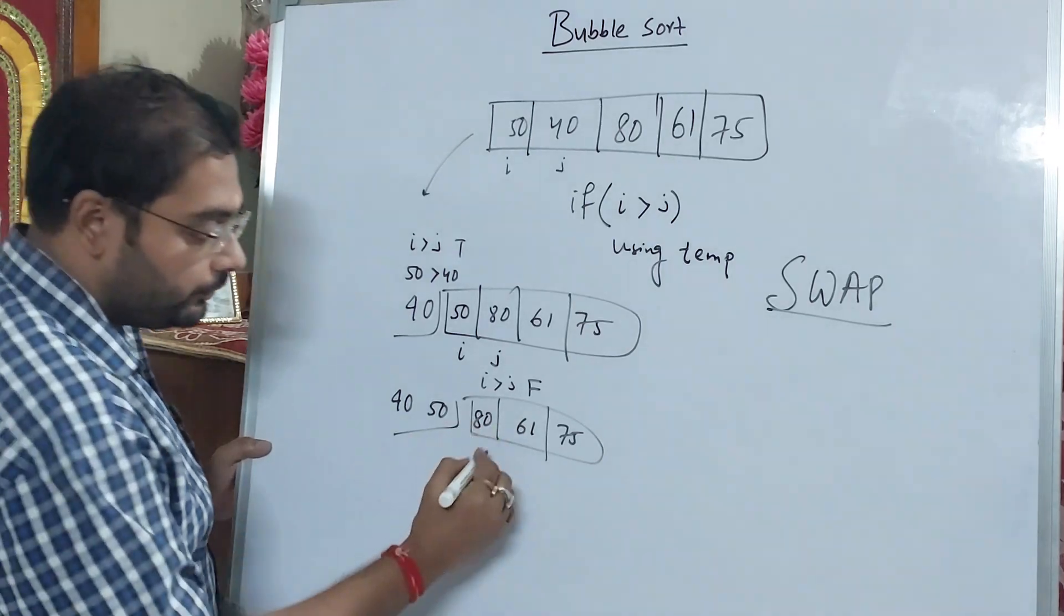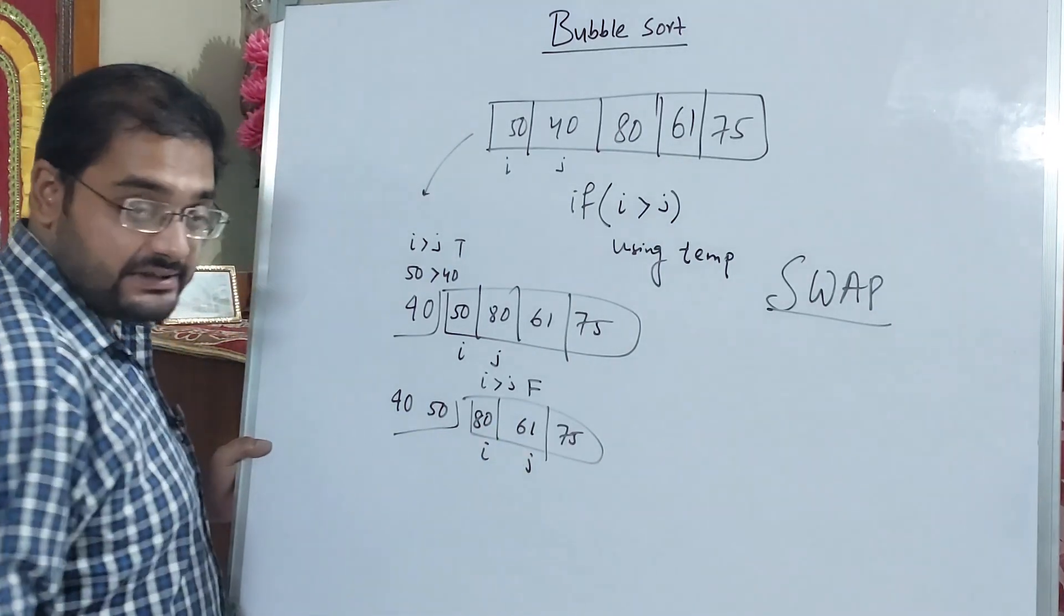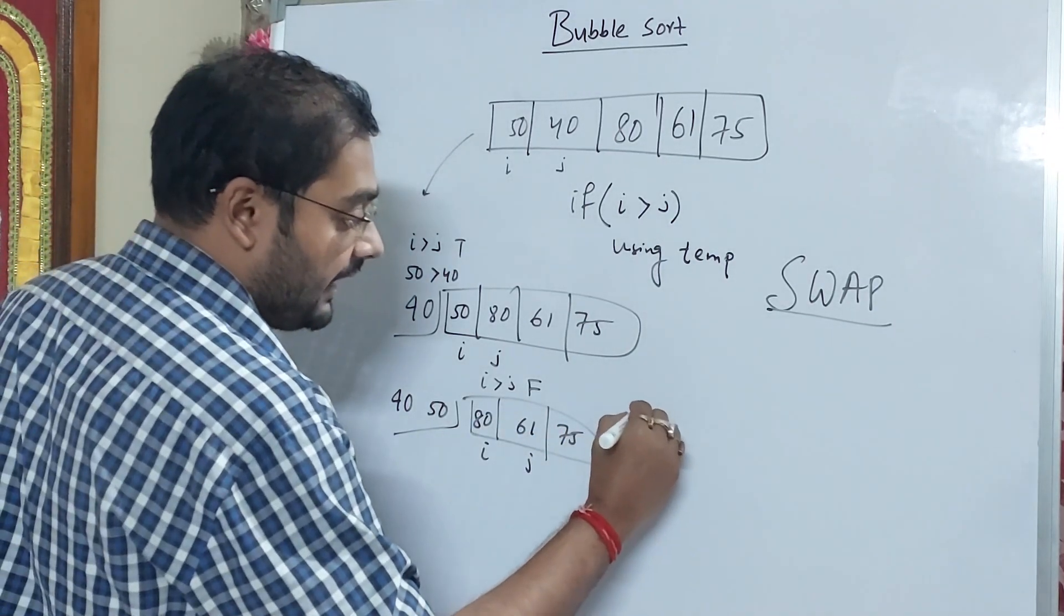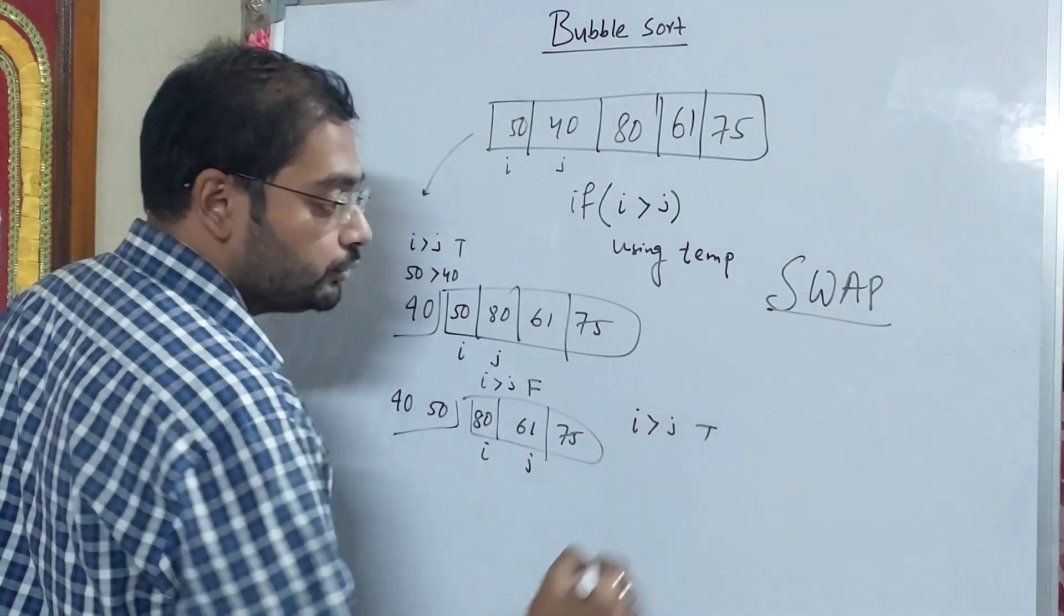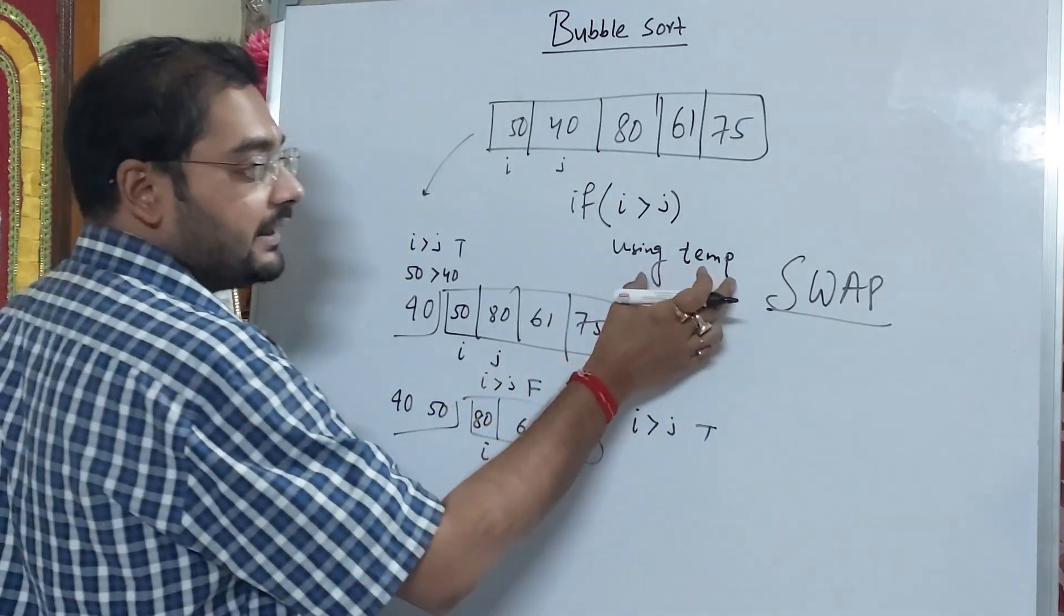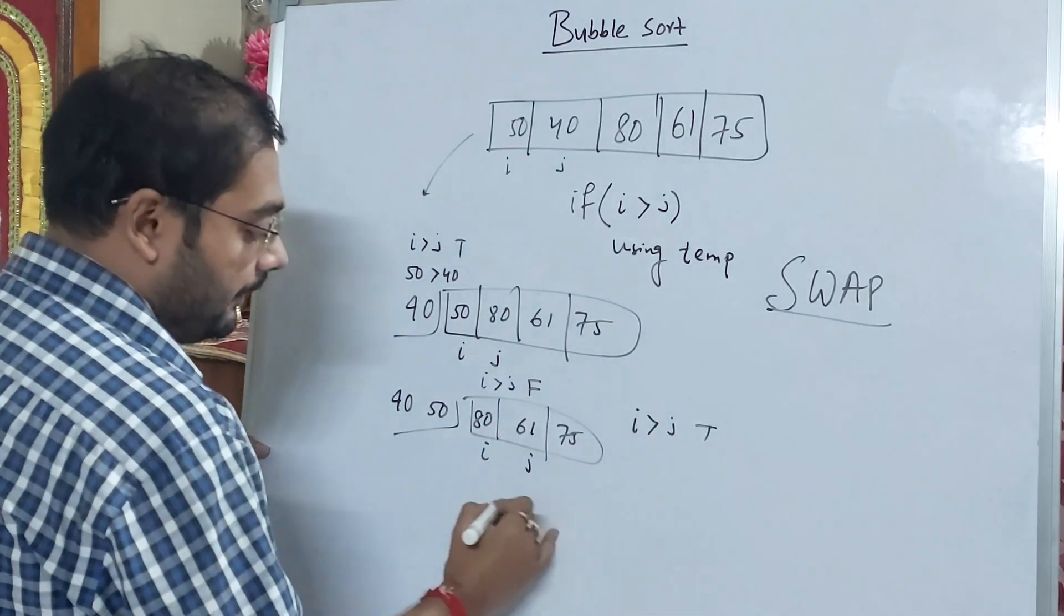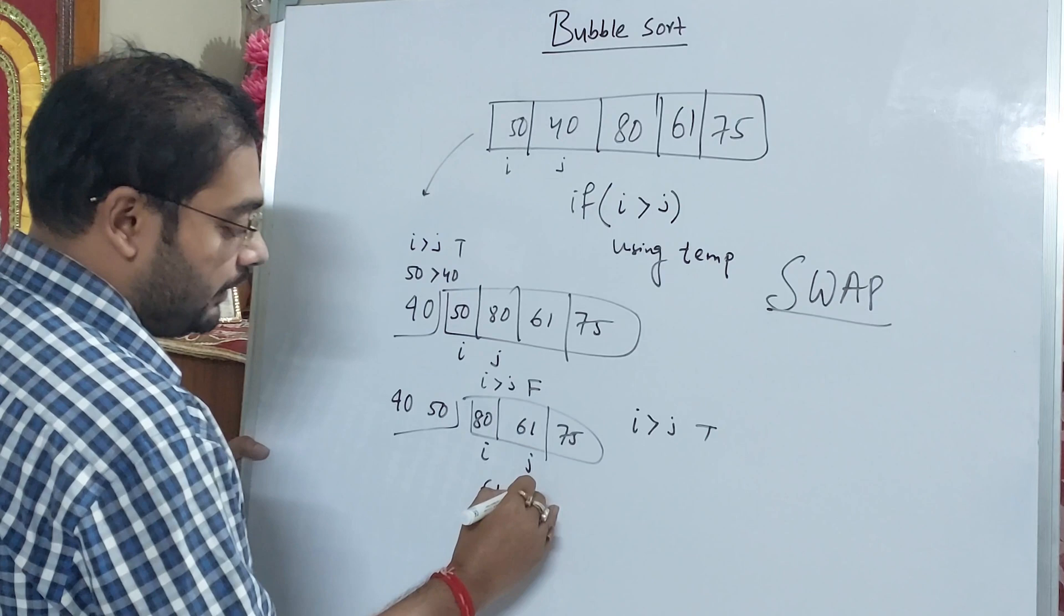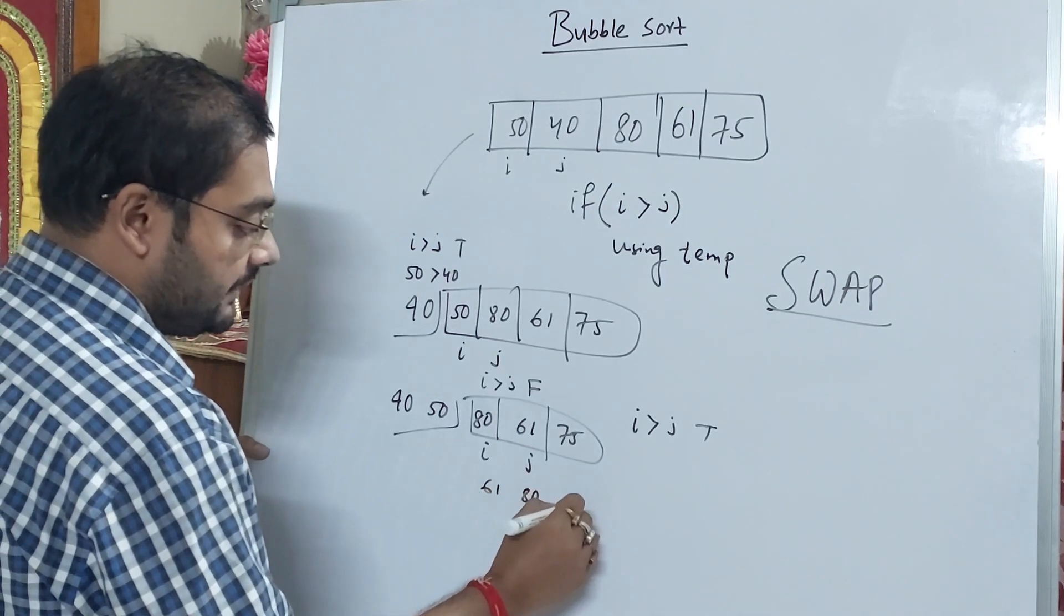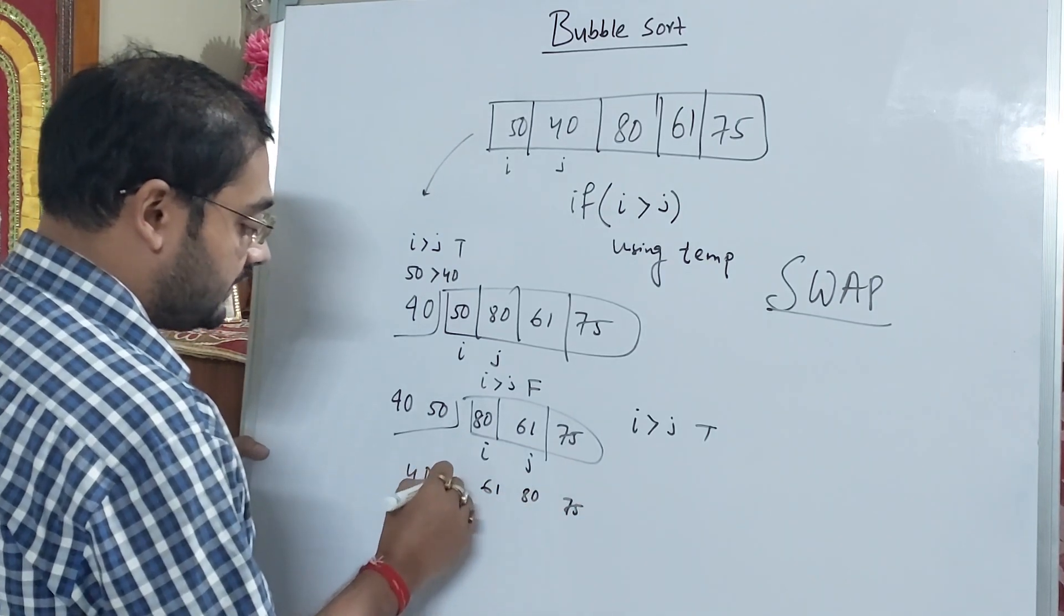What do we do? The second thing is I and the third is J. Now we are checking: is I greater than J? This is true. If it's true, we use the temporary variable. After swapping, the process gives us 40, 50, 61, 80, 75.